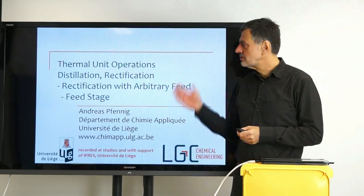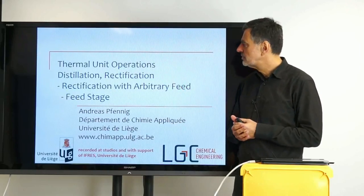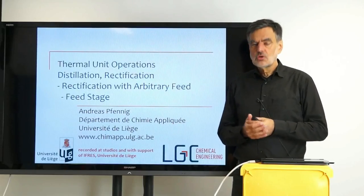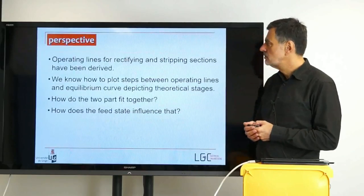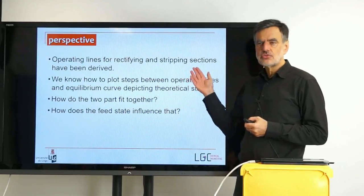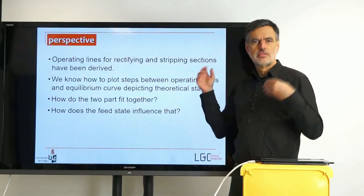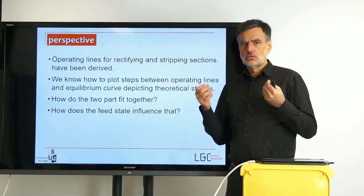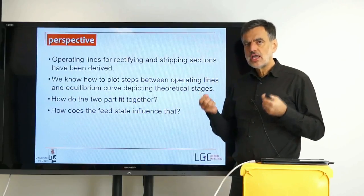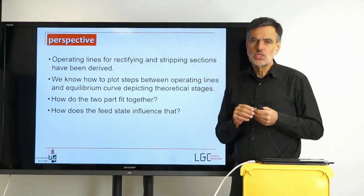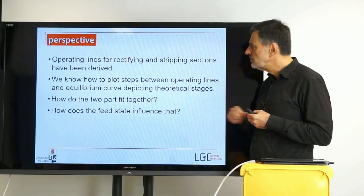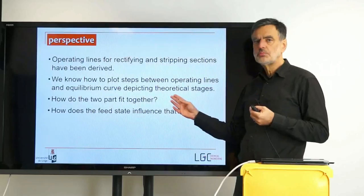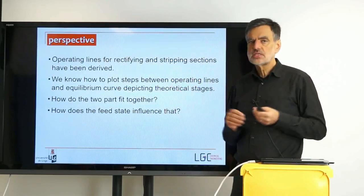Welcome back to this lecture on thermal unit operations. We are still in this large chapter on distillation and rectification, and today we want to deal with the feed stage. In the last videos, we saw that we can derive operating lines for the rectifying and stripping sections, that are straight lines in the y-x diagram. With those we can describe the result of balances, which describe the compositions of the streams that meet in between the theoretical stages. We know that we can plot the steps between the operating lines and the equilibrium curve in order to depict the theoretical stages throughout the entire column.